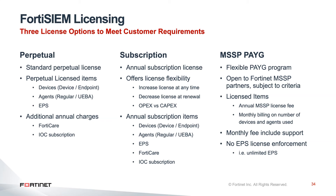For file integrity monitoring, you use the normal agent SKU. For UEBA, you ask the customer how many users or workstations they need to monitor for user activity, determine that number — say 500 — and need a 500-unit SKU value for UEBA. Then there's the events per second (EPS) rate: when you buy devices with FortiSIEM, a certain amount of EPS is included, but if you need more than the standard device count includes, you can buy additional EPS.